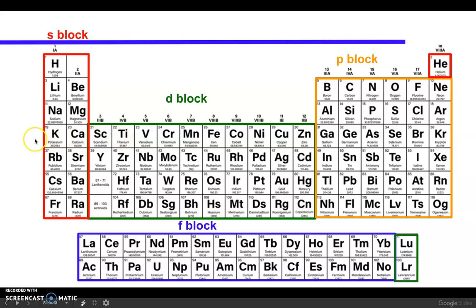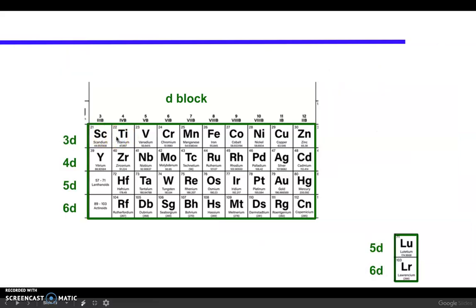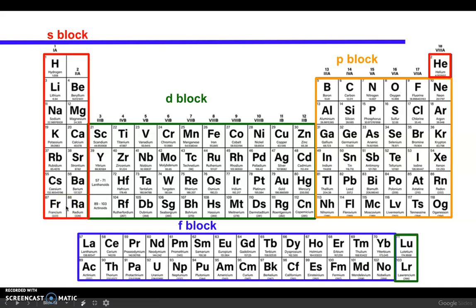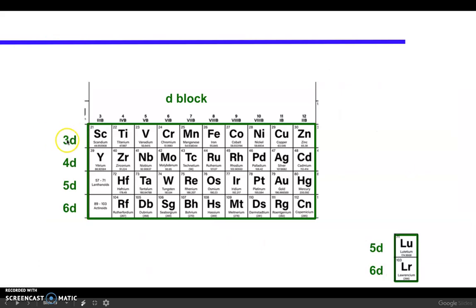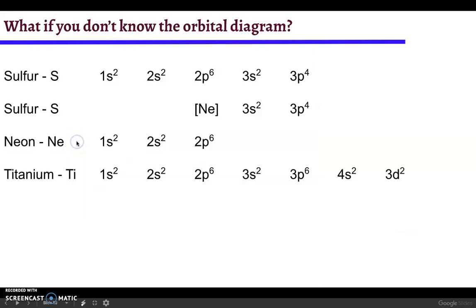And then last up, we're in the d block here for titanium. It's the second one in the d block. But remember, even though we're in row 4, this is not the 4d block. The d block is screwy. They've got different periods. So even though this is the fourth row, this is the 3d block. Titanium is the second element in the 3d block, and so it becomes 3d2.